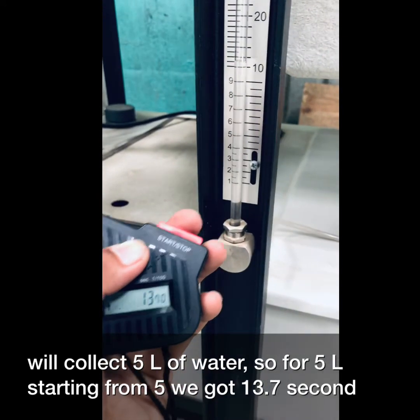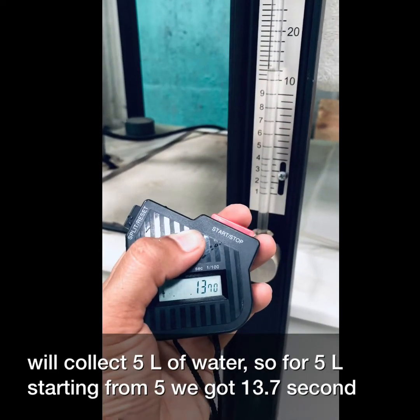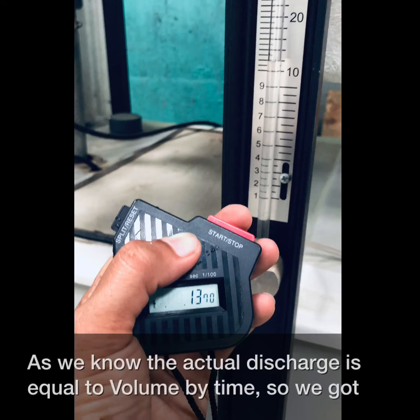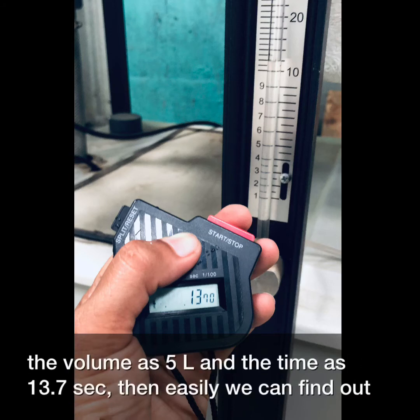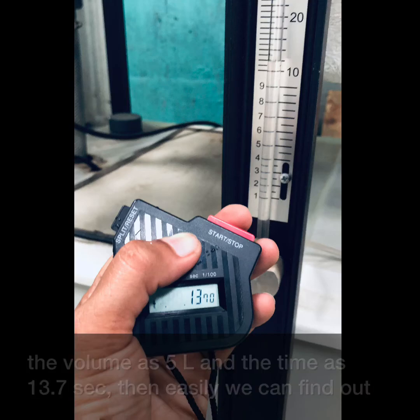For 5 liters starting from 5, we got 13.7 seconds. As we know, the actual discharge is equal to volume by time. So we got the volume as 5 liters and time is 13.7 seconds, and easily we can find out the actual discharge.